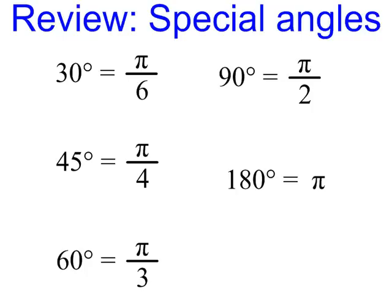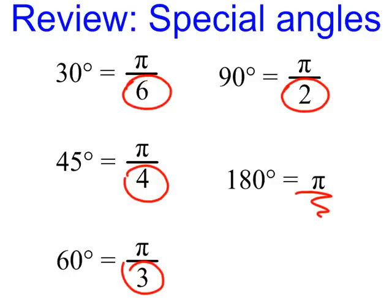I brought these all here onto one screen because I want you to get familiar with seeing those denominators. Any time you see any of these denominators - π over 6, π over 4, π over 3, π over 2, or just a multiple of π with no denominator - that is your dead giveaway that you are dealing with special angles and you do not need a calculator.